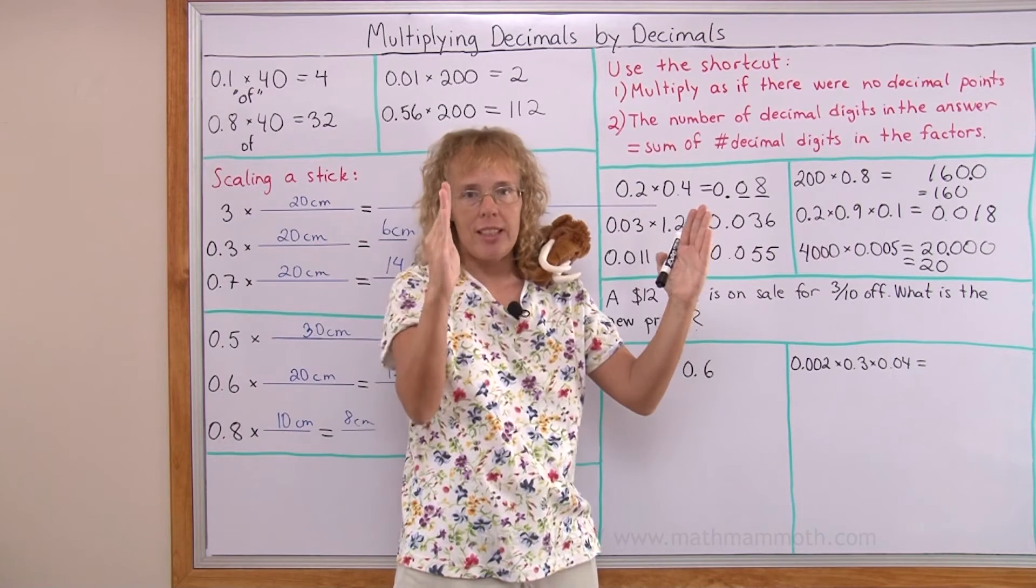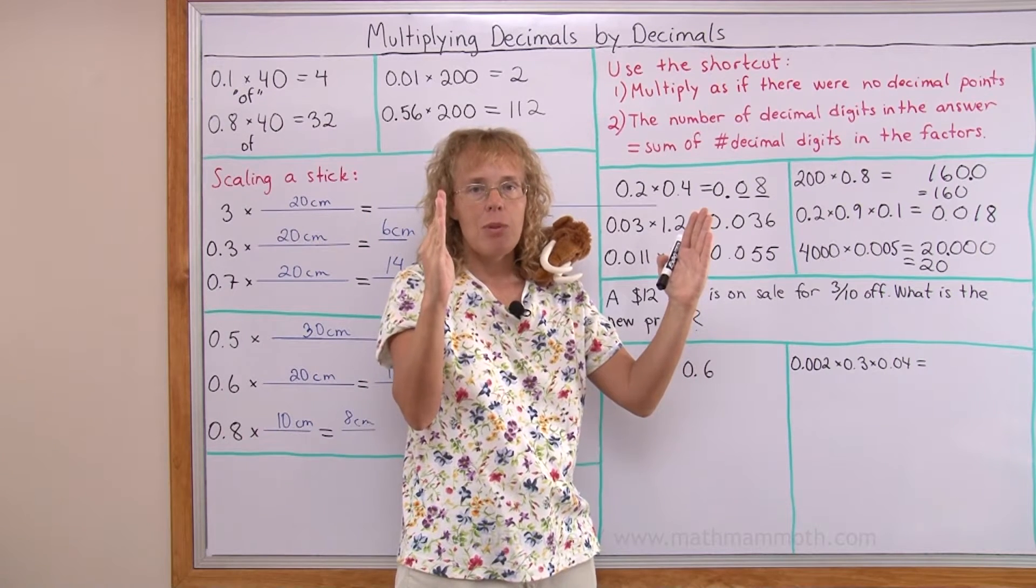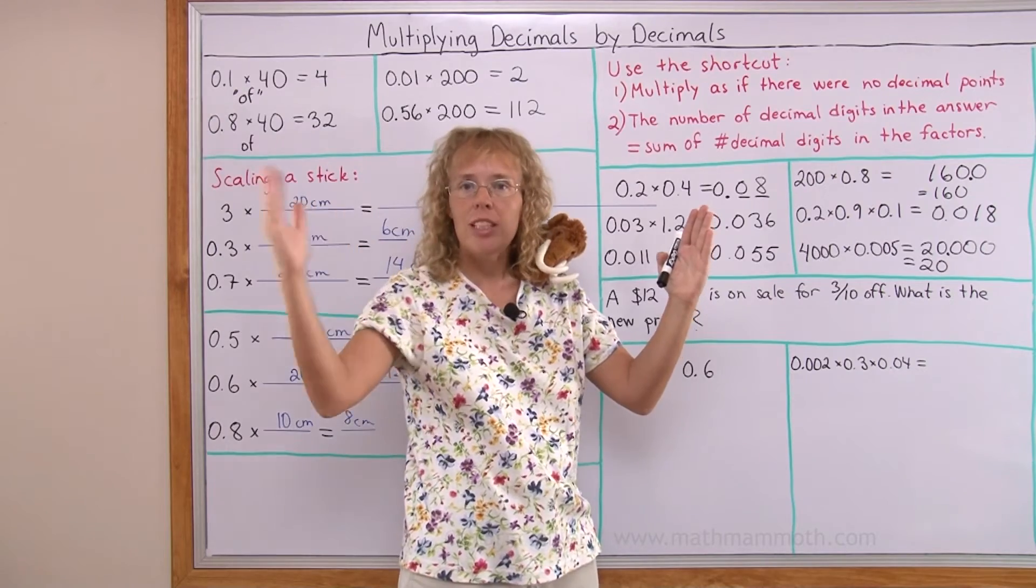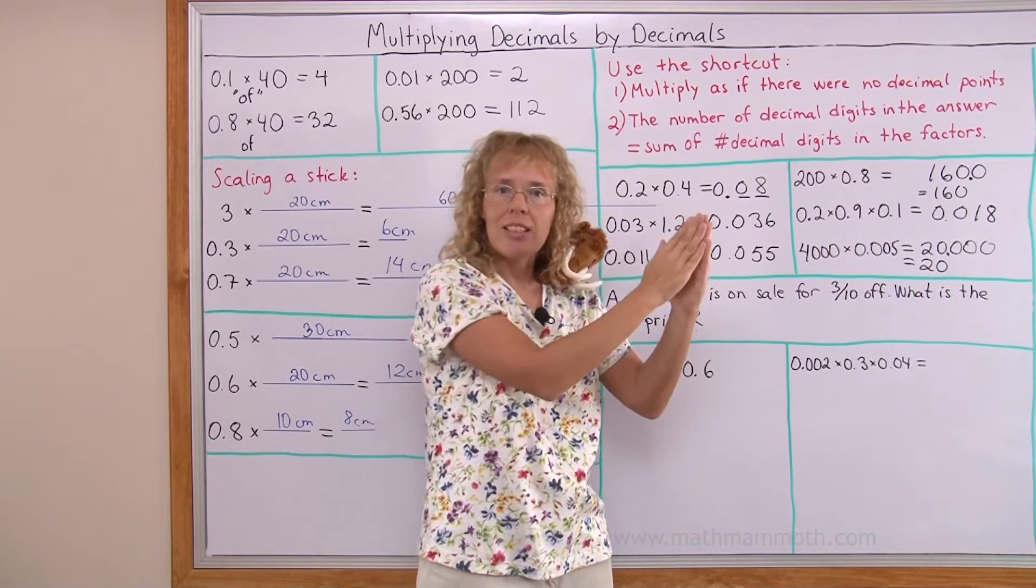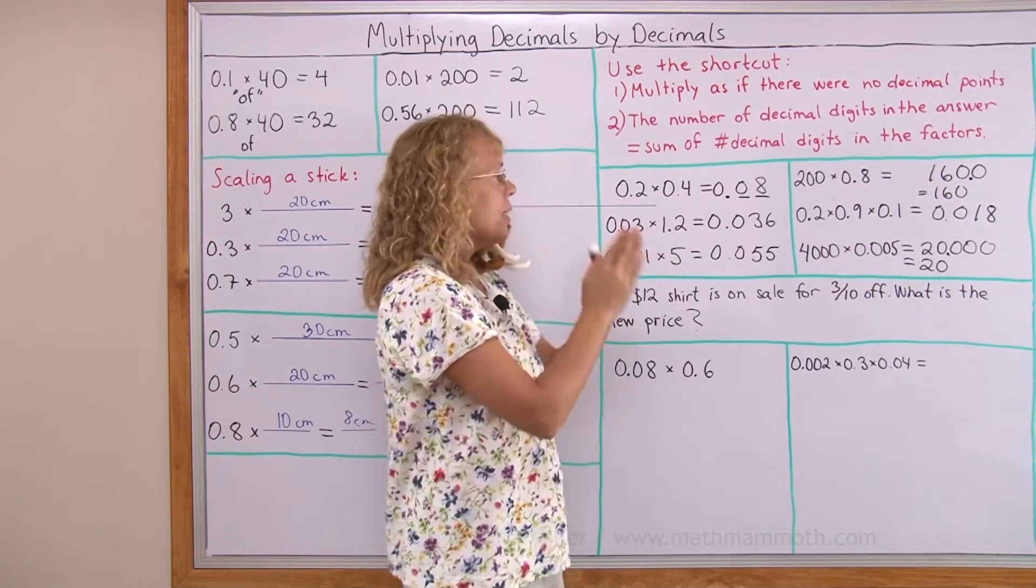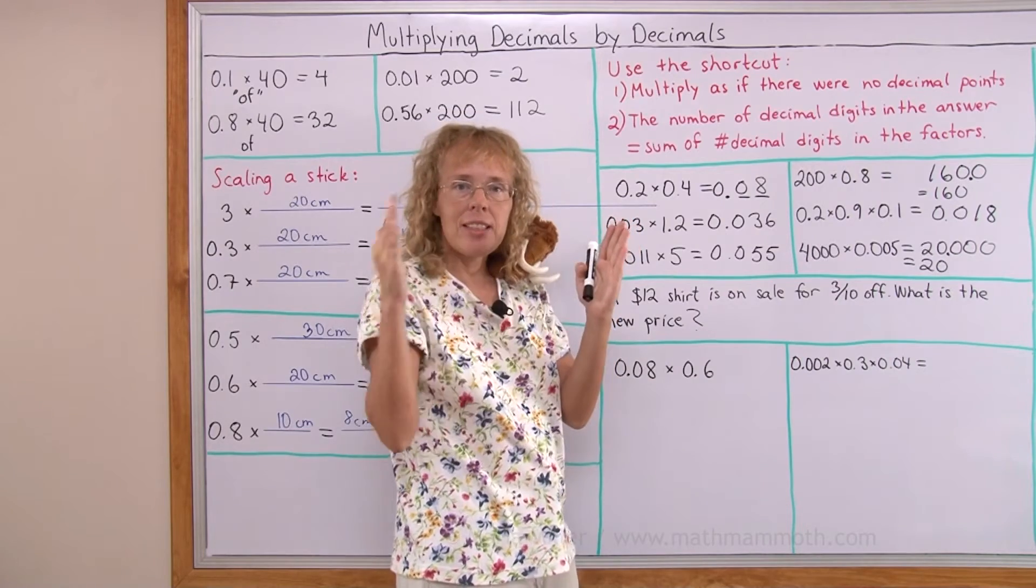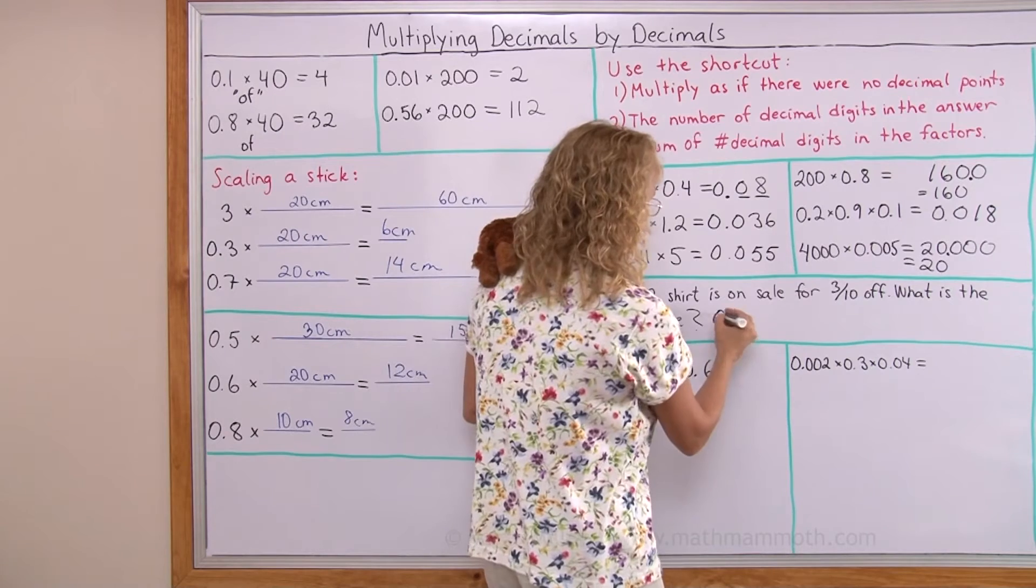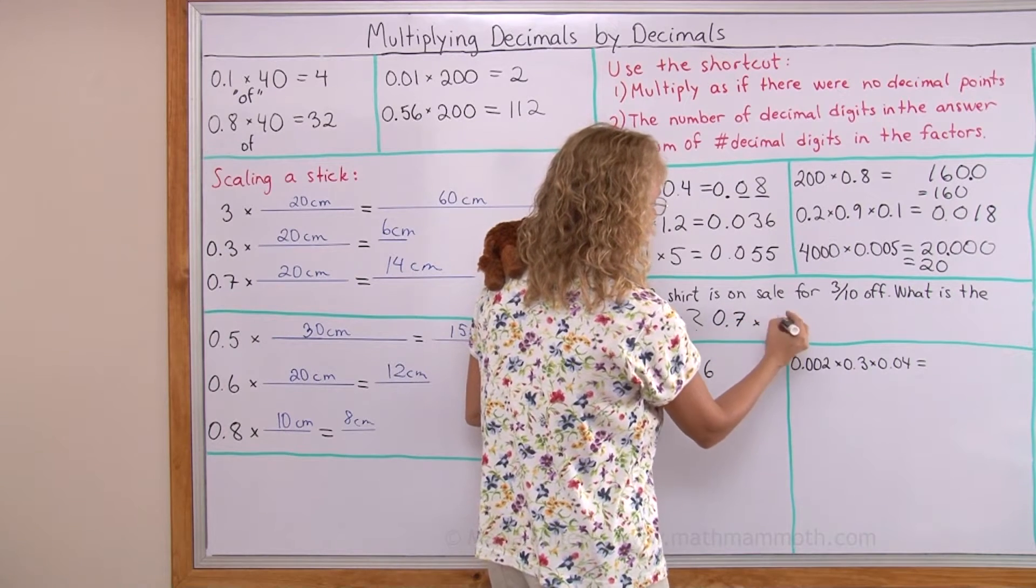All of the whole price is here. And you take off three tenths of the price. How much of the price is left? What fraction of the price is left? If you take three tenths off you have seven tenths left. Right? So we will multiply seven tenths times the price.